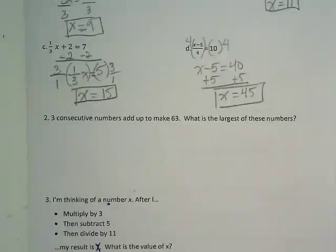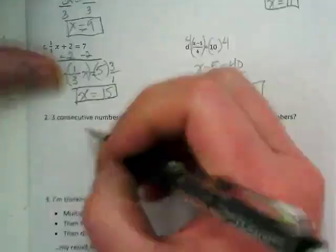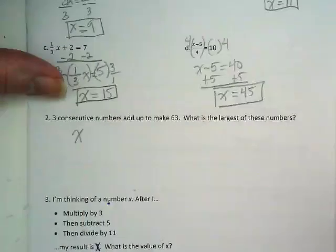In the survey, there were a couple of you who asked how to do number 2. If I have consecutive numbers, that means that they're in a row, so 4, 5, and 6 are consecutive numbers.